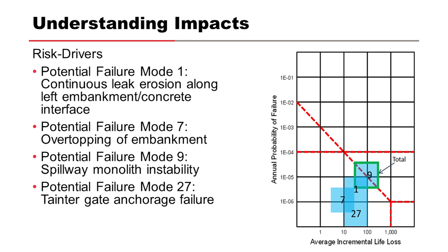Here we can see an example of a risk estimate. The annual probability of failure is shown on the vertical axis and the average life loss due to failure is shown on the horizontal axis. Each box represents a potential failure mode and the red lines represent the tolerable risk guidelines — this is often called an FN plot. The flood hazard is a key component of the risk estimate since the annual probability of failure equals the probability of the flood hazard times the probability of failure. For example, the risk estimate for overtopping of an embankment is mostly a function of the probability that the flood overtops the embankment. Flood hazard curves directly affect the risk estimate and are an essential element of every risk assessment.